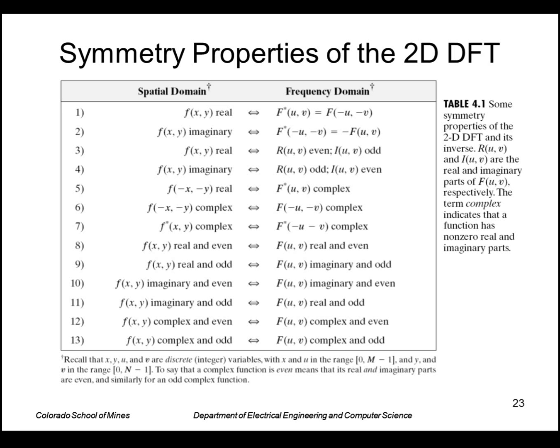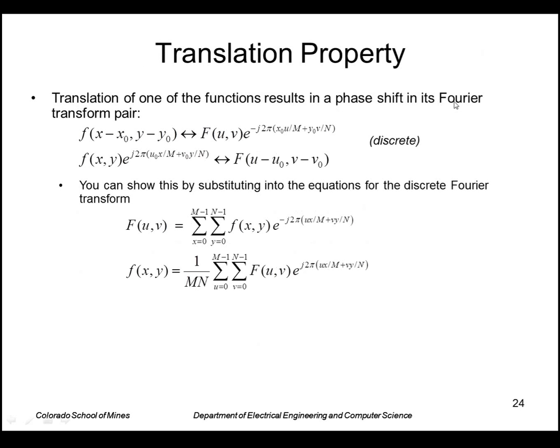This shows a complete table of the symmetry properties. Let's look at some other properties of the Fourier transform, such as the translation property. So let's say we have a function f(x,y) and its transform F(u,v). Now if we shift f(x,y) by x_0 and y_0, the effect on the Fourier transform is multiplying each value of (u,v) by an exponential like this. Or if we shift the transform by (u_0,v_0), that multiplies the original function by these exponentials. You can show that by substituting these into the equations for the discrete Fourier transform.